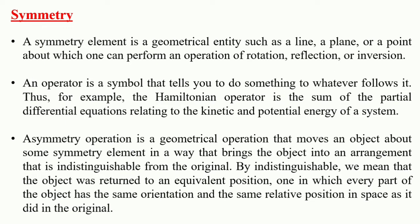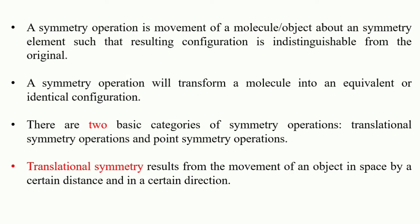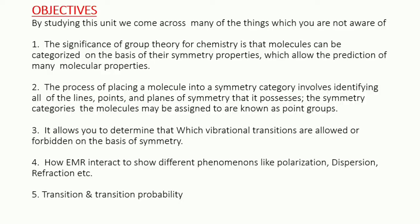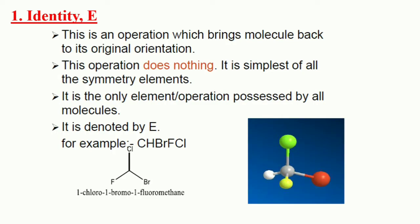We also learned about the identity. We know that symmetry has two basic categories: translational symmetry and point symmetry. Translational symmetry is actually the movement of an object in space by a certain distance in a specific direction, while point symmetry occurs in molecules where there is at least one point in space that remains unchanged with respect to any symmetry operation. We have already discussed the objectives and the identity — the identity was actually doing nothing to a molecule.